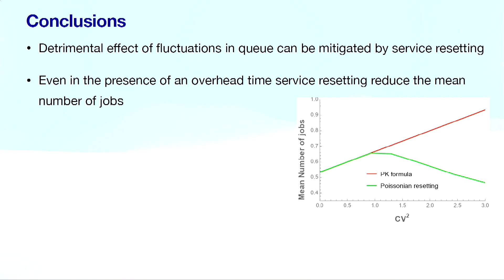The detrimental effect of fluctuation in a queue can be mitigated by service resetting, even in the presence of an overhead time. Service resetting reduces the mean number of jobs so you wait a minimum time to get your service done. So, when there is no hope and you are in doubt, just remember to reset. Thank you.